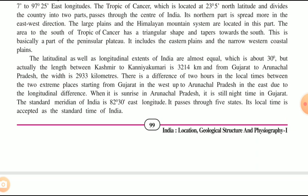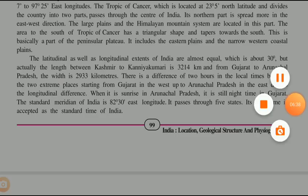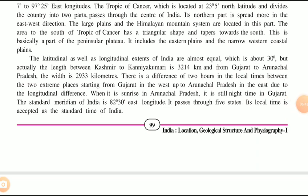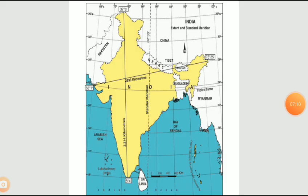The 82.3 degrees east longitude that passes through Allahabad determines Indian Standard Time, which is five and a half hours ahead of Greenwich Mean Time — the international standard time. The local time at Allahabad is applicable to both west and east of that particular longitude, and that is why it is termed as the Standard Meridian of all India. This physical map of India shows the latitude and longitudinal division of India.